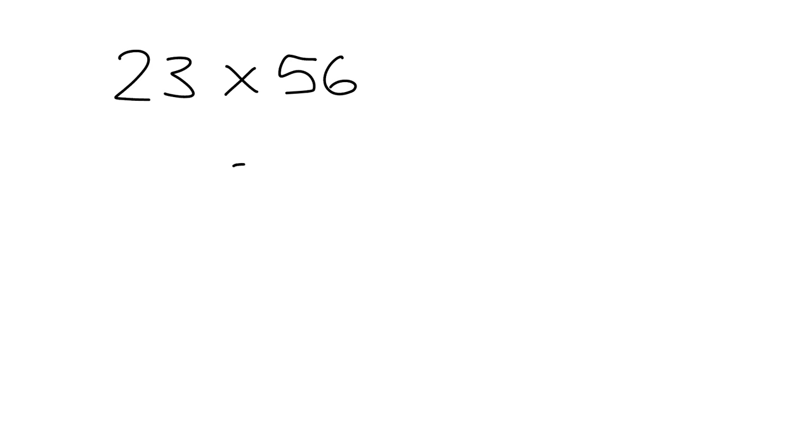We get 23 multiplied by 56. We start from the right. 6 times 3 is 18. Put down the 8, carry the 1. 6 times 2 is 12, plus 1 gives me 13. Then because I'm now multiplying by 50, I put down a 0 and I can just multiply by 5. 5 times 3 gives me 15. Put down the 5, carry the 1. 5 times 2 is 10, plus 1 gives me 11.